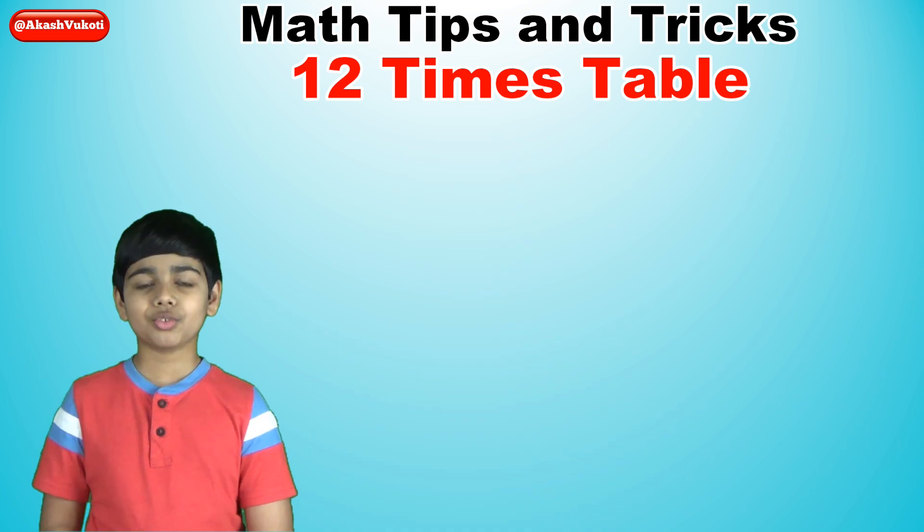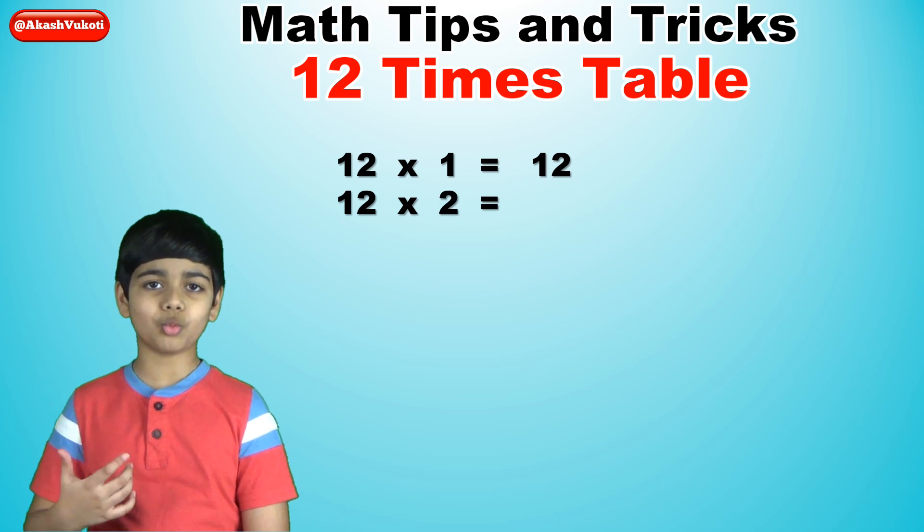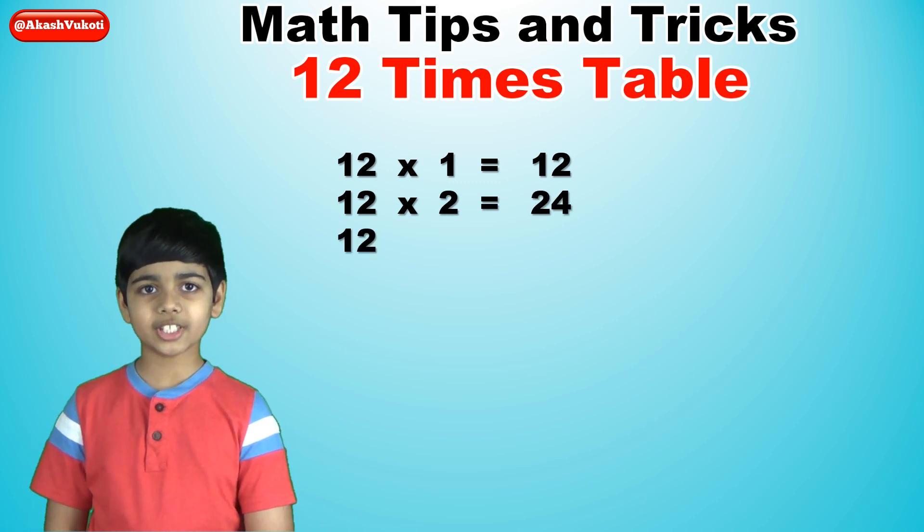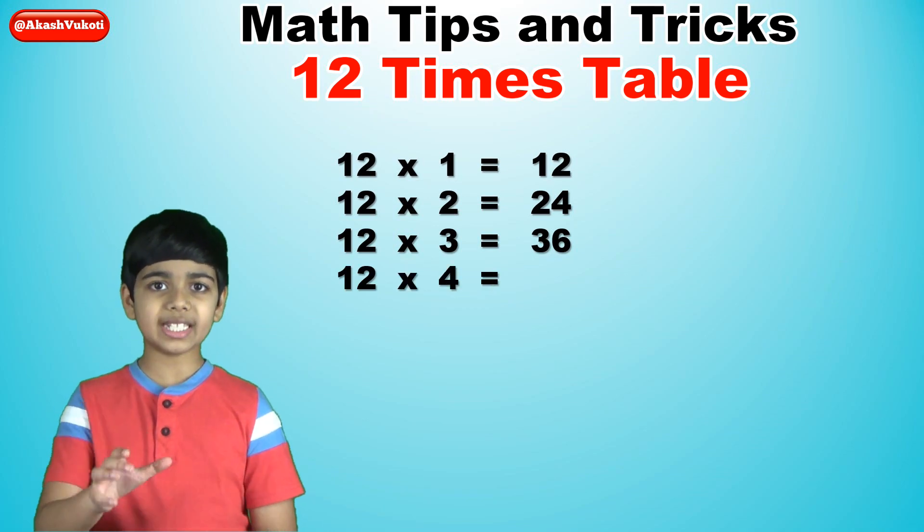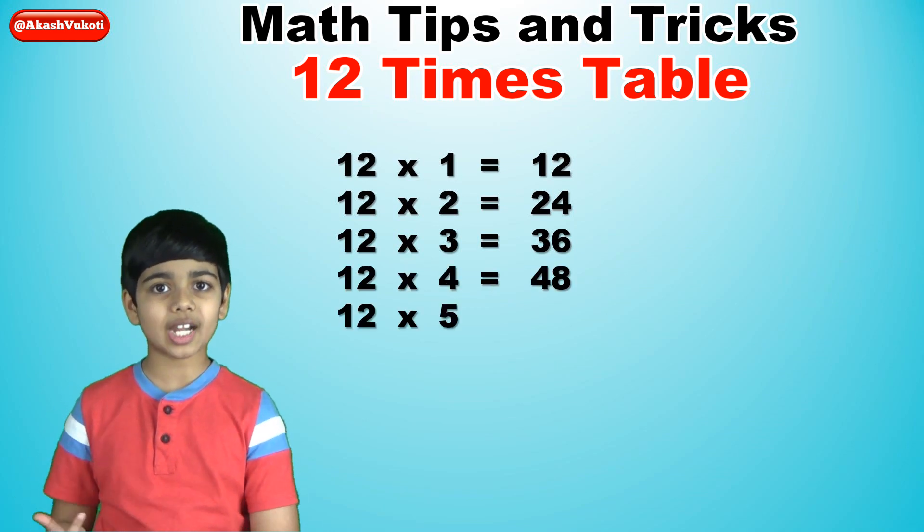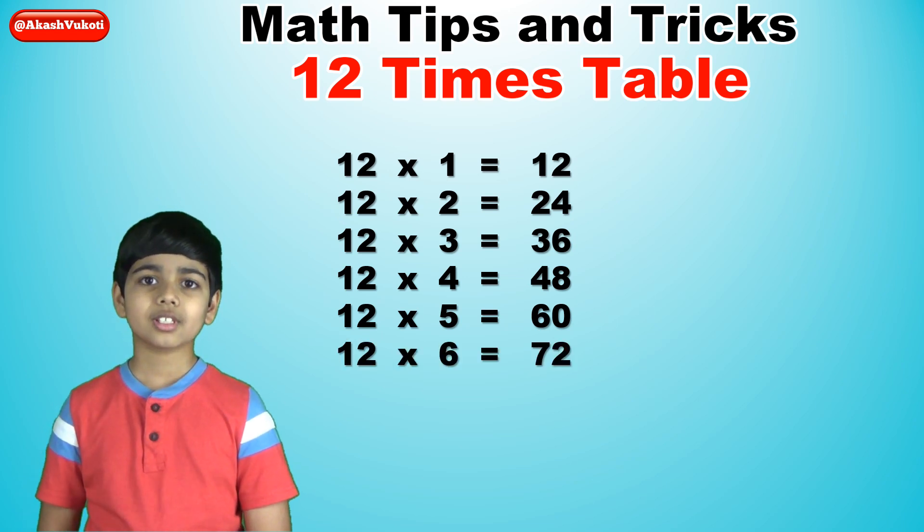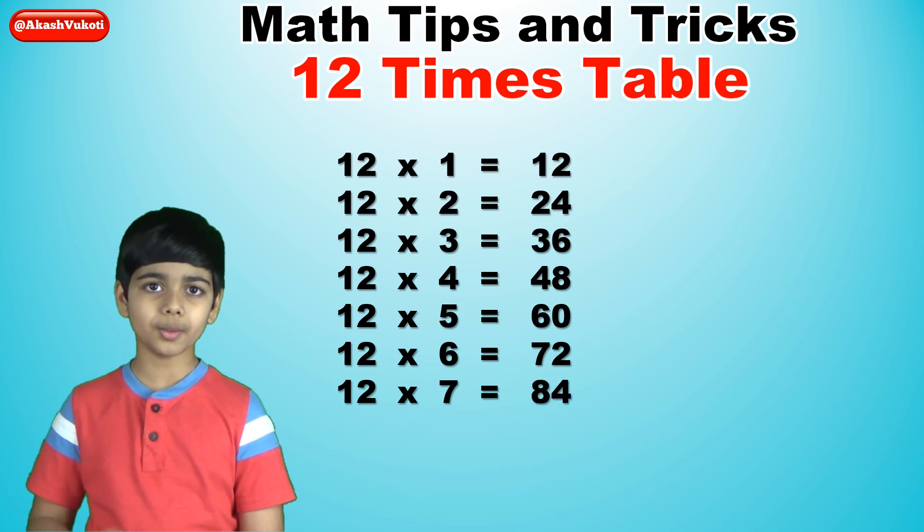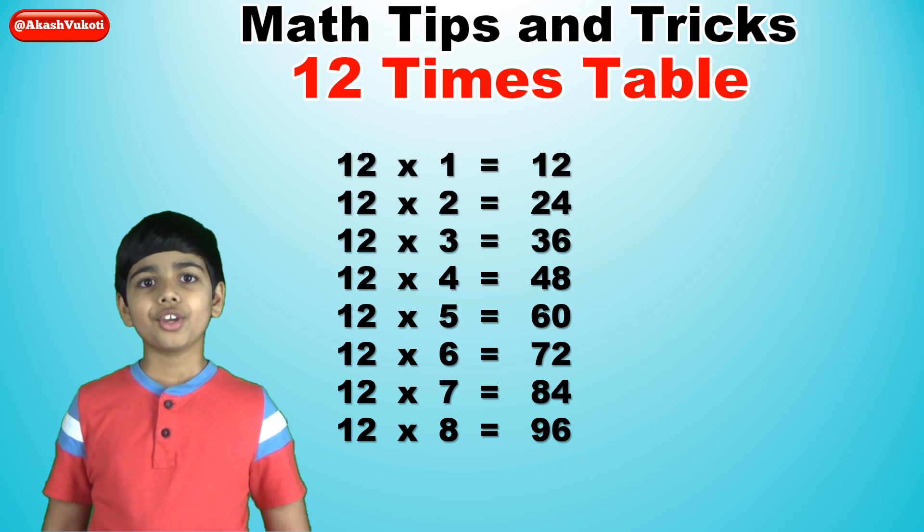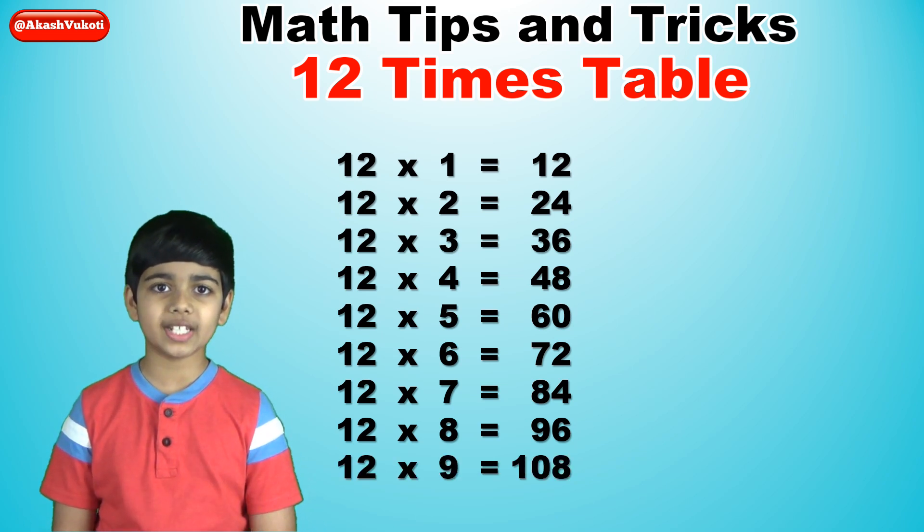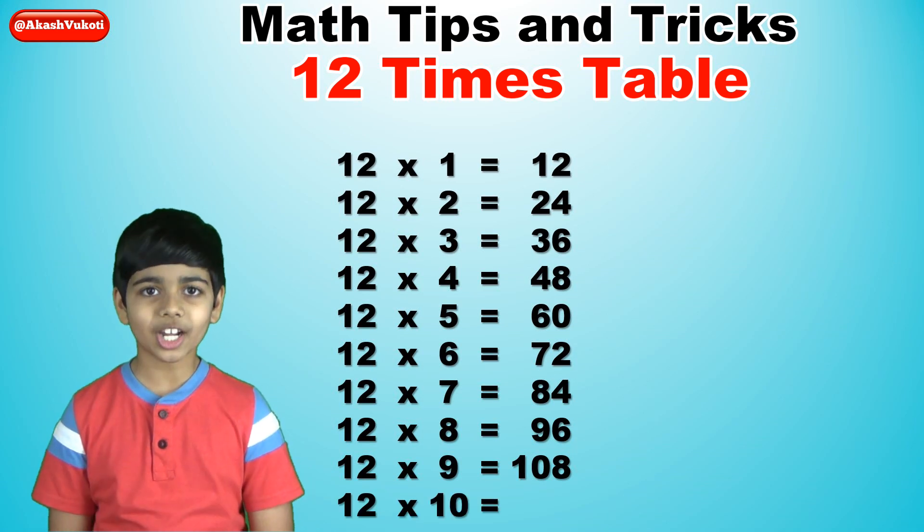So, let's start. 12 times 1 is 12. 12 times 2 is 24. 12 times 3 is 36. 12 times 4 is 48. 12 times 5 is 60. 12 times 6 is 72. 12 times 7 is 84. 12 times 8 is 96. 12 times 9 is 108. And finally, 12 times 10 is 120.